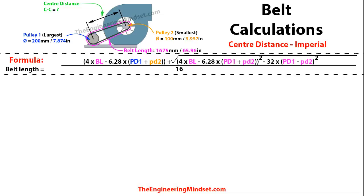Now we're going to calculate the distance between the two centers again, same as the metric version we just did, but this time in imperial units. The formula we need is exactly the same as the metric version.